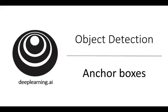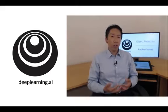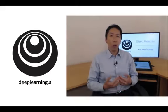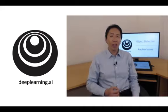One of the problems with object detection as you've seen it so far is that each of the grid cells can detect only one object. What if a grid cell wants to detect multiple objects? Here's what you can do.